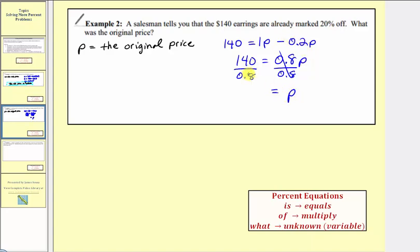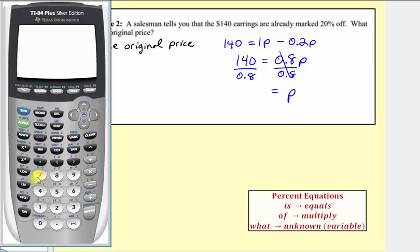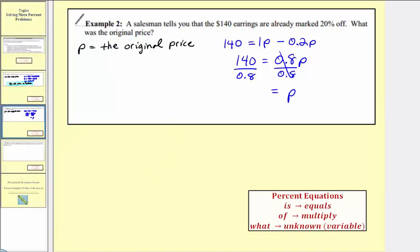And now we'll find the quotient on the left. We have 140 divided by 0.8, which equals 175. Which means the original price was $175.